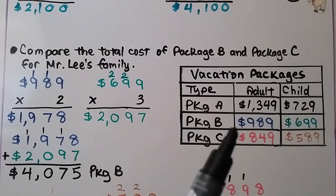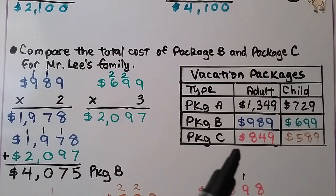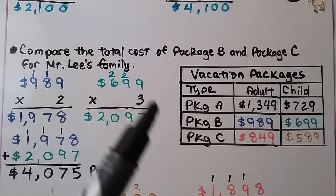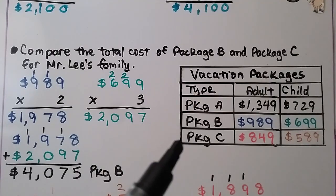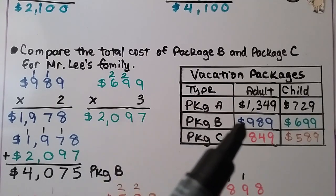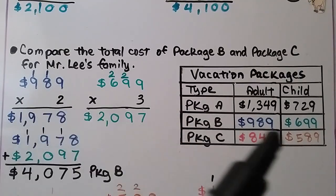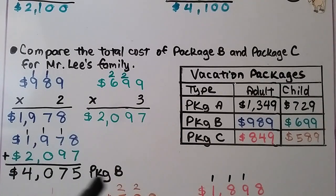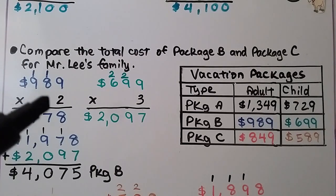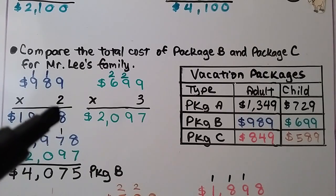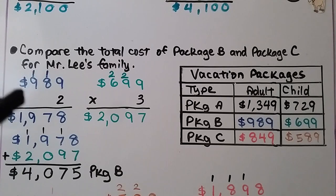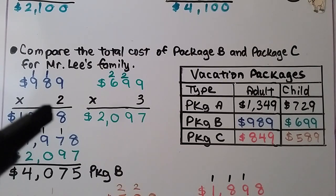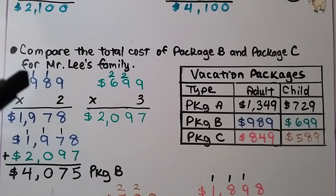Now we compare the total cost of package B and package C for Mr. Lee's family. We need the exact cost for package B: $989 times 2 for the adults. Starting in the ones place: 2 times 9 is 18 — regroup the 1, put the 8 down. 2 times 8 is 16, plus 1 more is 17 — regroup the 1, put the 7 down. 2 times 9 is 18, plus 1 more is 19. We have $1,978 for the adults.